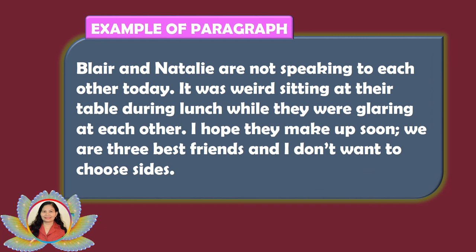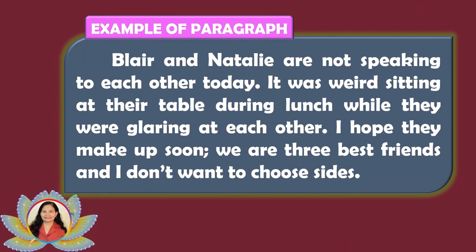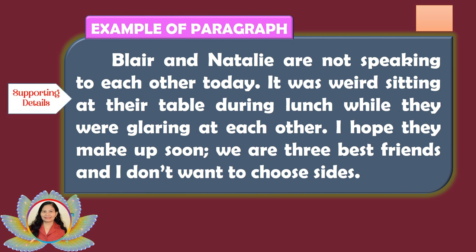Fifth sample paragraph: 'Blair and Natalie are not speaking to each other today. It was weird sitting at their table during lunch while they were glaring at each other. I hope they make up soon — we are three best friends and I don't want to choose sides.' This paragraph adapts a rectangular structure where the topic sentence is not explicitly stated but implied. The reader must discern the main idea from the supporting details. The implied topic sentence is: 'Blair and Natalie had a fight.'